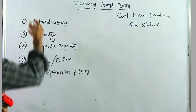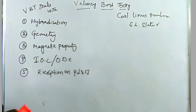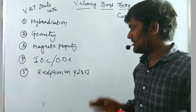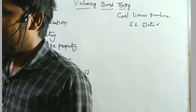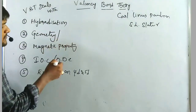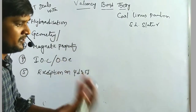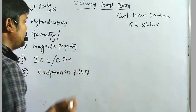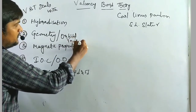Generally, VBT deals with hybridization, geometry, magnetic properties, as well as inner orbital complexes and outer orbital complexes. The fifth topic is exceptions in the 4D and 5D series. In geometry and hybridization, VBT gives information about which orbitals participate in hybridization — in other words, orbital involvement.